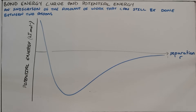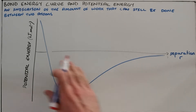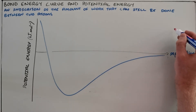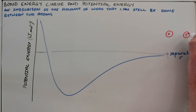Potential energy is an indication of the amount of work that can still be done between two atoms. We often look at the bond energy curve to understand this potential energy and the concepts of bond length and bond energy better. This curve is often read from right to left. On our x-axis we have separation — the distance between two atoms that are going to form a bond. As an example, we will use the distance between a hydrogen atom and a fluorine atom.